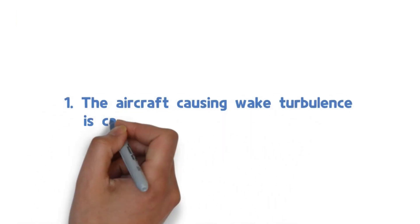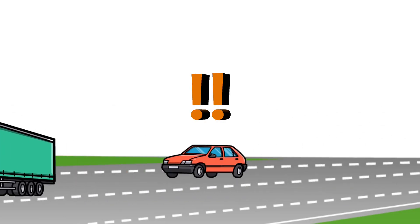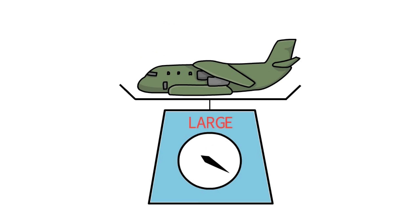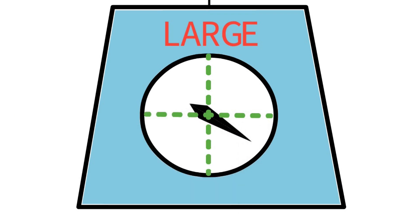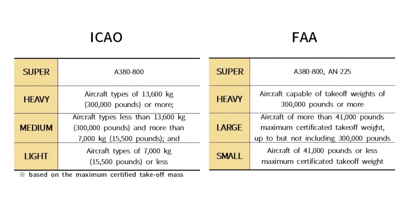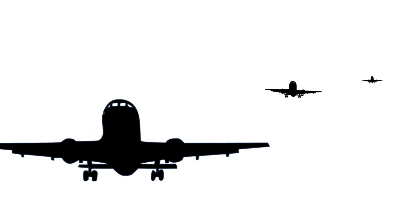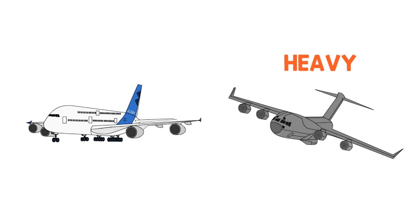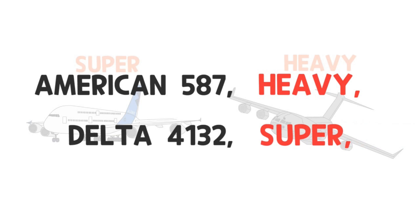First, aircraft causing wake turbulence are categorized. Just as you feel a different tremor passing a small car versus a large truck on the highway, the intensity of wake turbulence differs depending on aircraft weight. According to FAA and ICAO, wake turbulence is classified into four categories as shown in the table. Since controllers cannot notice every aircraft's category at once, super or heavy aircraft add the word 'heavy' or 'super' to their call sign — for example, American 587 Heavy or Delta 4132 Super — and so does the controller.